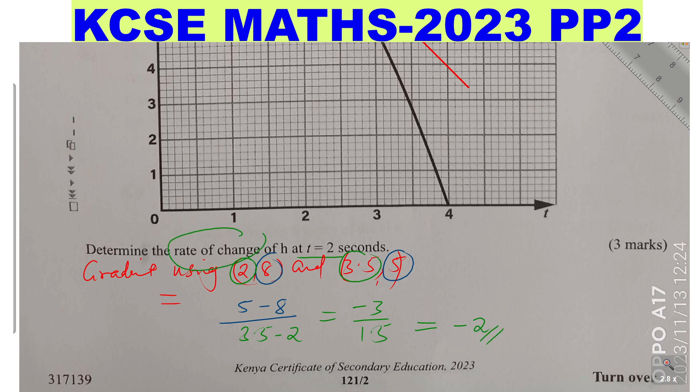So the rate of change at H, at t equals 2 seconds is negative 2.